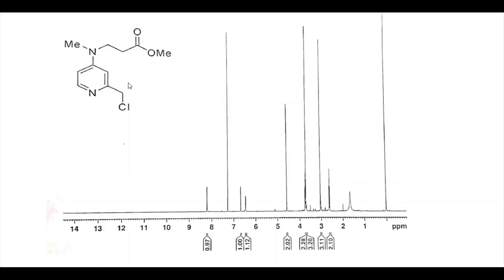We have a molecule over here and this is the spectra of this molecule. We have to check whether this is the spectra of this molecule or not. This is what the actual NMR spectra looks like. These are the delta values written over here, 1 to 14. There are various peaks corresponding to your structure. We have to check whether the structure is present or not. Before proceeding, I would like to tell you some very important things.